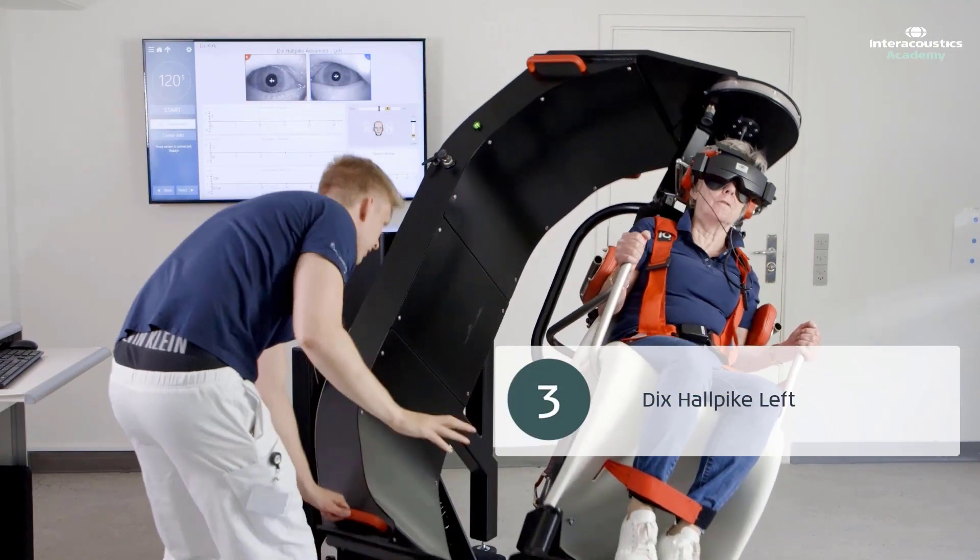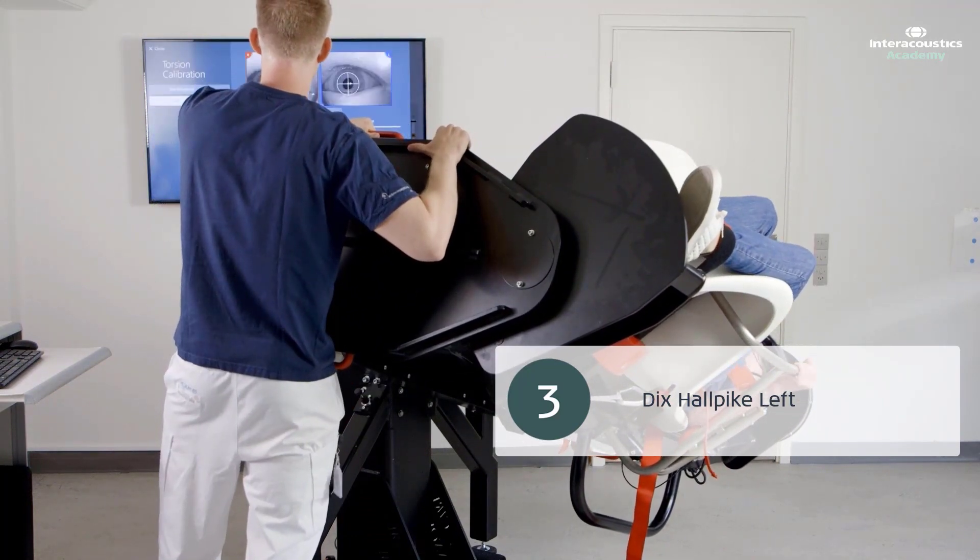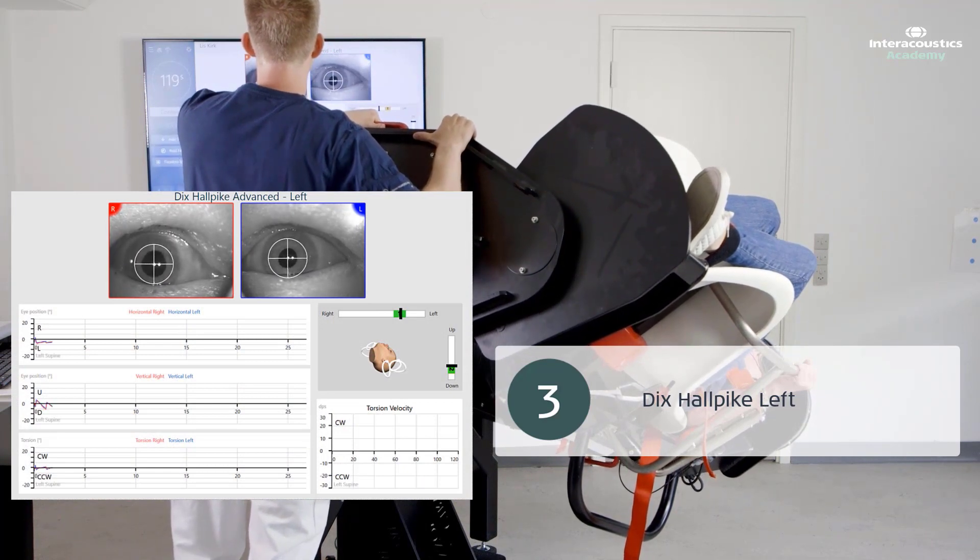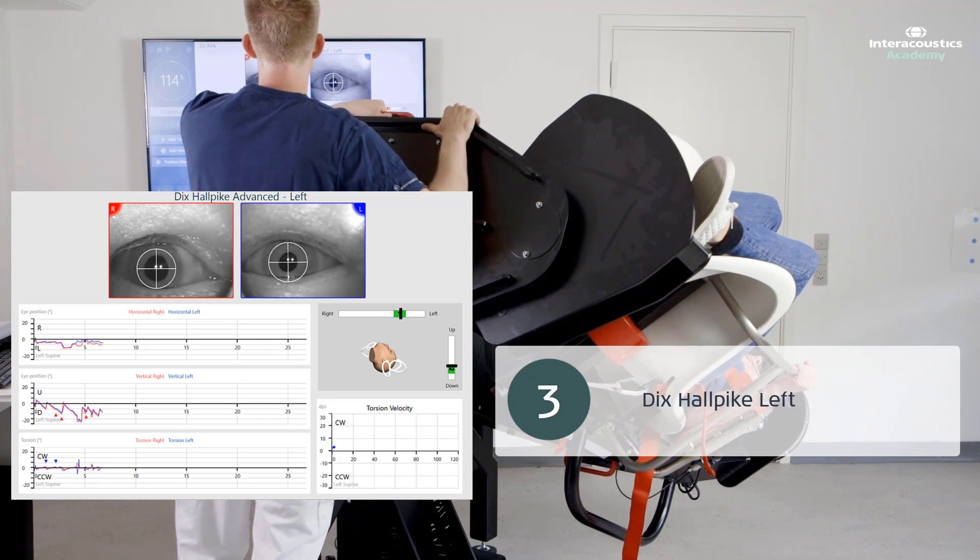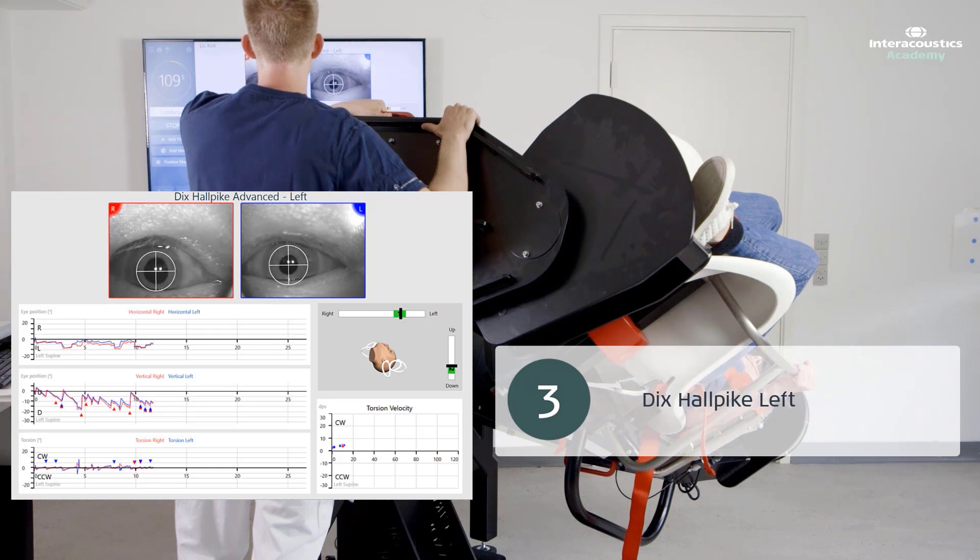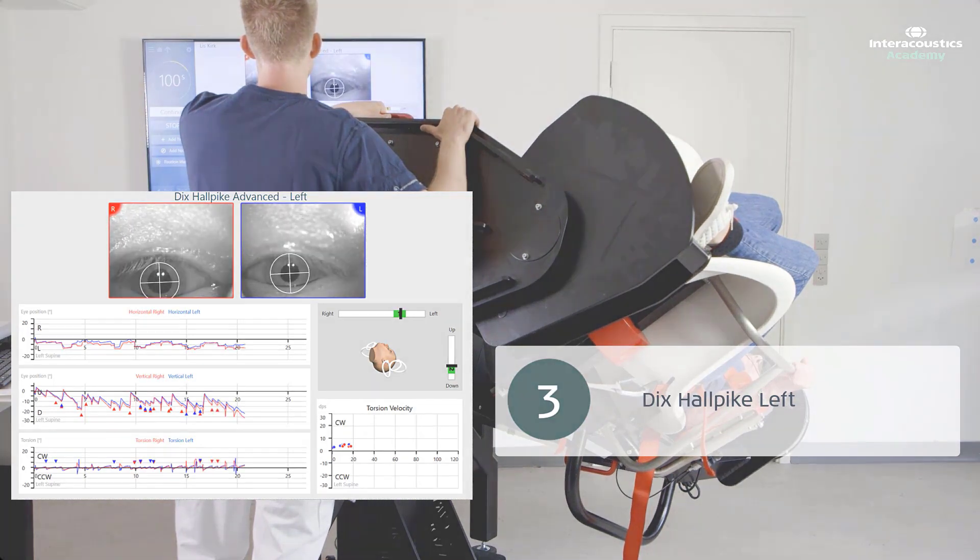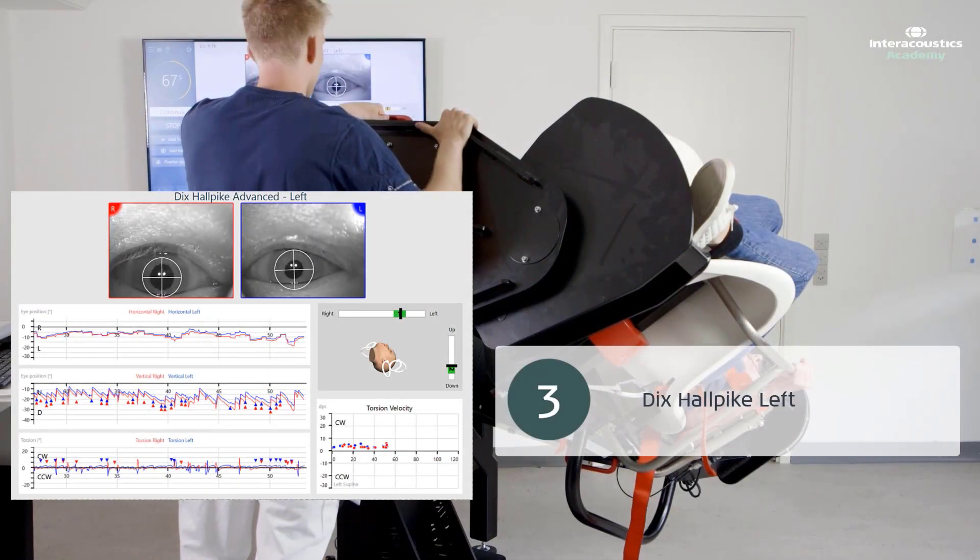Initially, a left Dix-Hallpike test was performed. If positional nystagmus is observed, latency should also be noted. However, in this case, it's quite hard to conclude if there is any latency because of the frequent eye blinks. Continuous upbeat and rotational nystagmus is observed throughout the observation period with the patient positioned in the left Dix-Hallpike position. The patient complains of a continuous concomitant spinning sensation throughout the entire Dix-Hallpike test position.